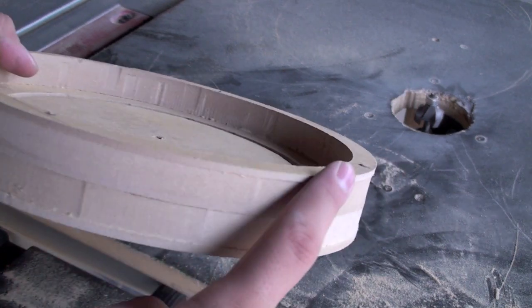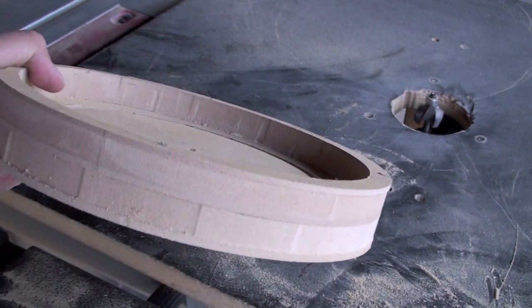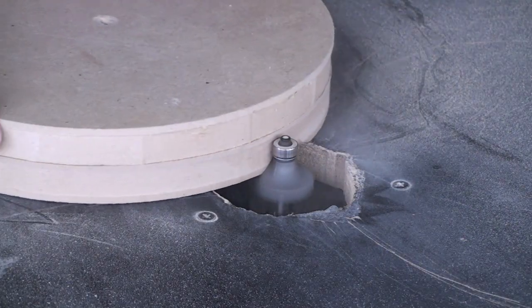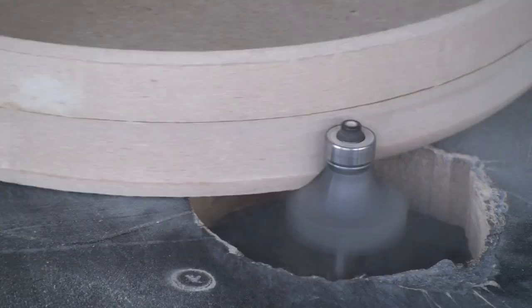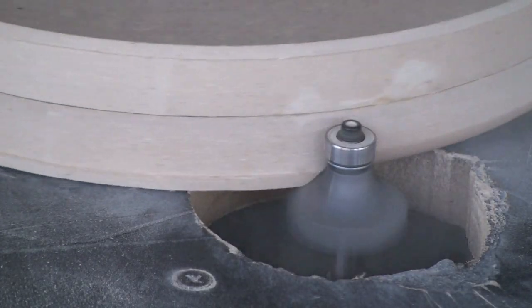Next, we'll round off the edges with a round over bit. Turn on the router and begin rounding the edges. Don't worry about the brad nails, the bit will easily cut through them.